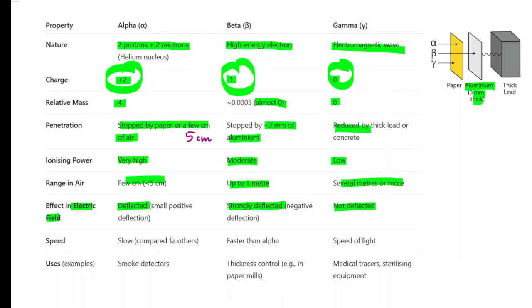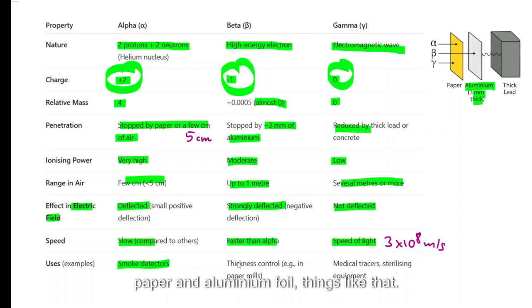Uses. Alpha radiation are used for smoke detectors. Beta radiation is used to measure thickness of paper and aluminum foil, things like that. Gamma radiation is used as medical tracers, sterilizing medical equipment, sterilizing soft fruits, things like that.